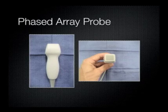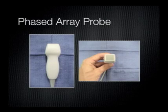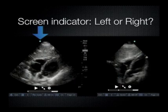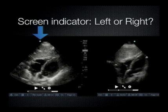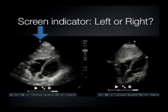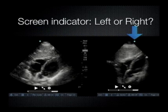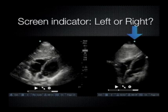Most ultrasound machines have cardiac presets that optimize frequencies and tissue harmonics for imaging the heart. A lot of people get confused by where the screen marker should be located. For abdominal and pelvic exams, the indicator is usually on the left-hand side of the screen, but for echocardiographers, the standard is to have the indicator on the right side of the screen. It's important to recognize this because flipping the screen indicator will flip your cardiac image.